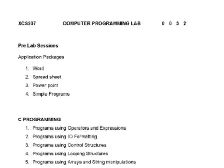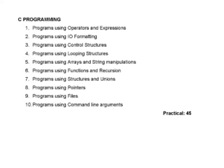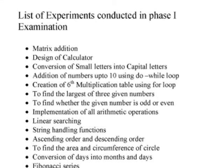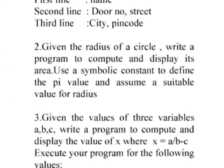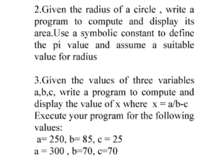Regarding the lab exercises, students first go through pre-lab sessions — since students have not had much prior exposure to computer programming — covering Word, spreadsheet, PowerPoint, and simple programs in C. Then they enter the regular program sessions involving expressions and related programs. The total practical sessions are 45. These are the experiments conducted in the first phase examination. Assignments for the other components are given by the course teacher during coursework.